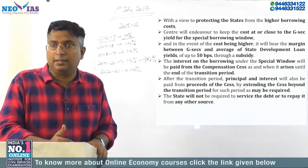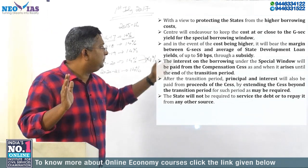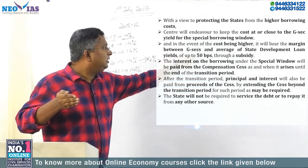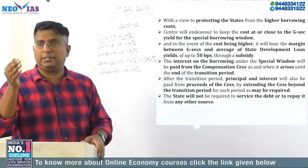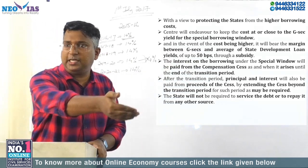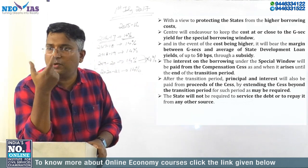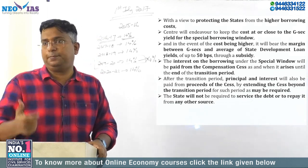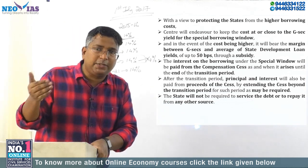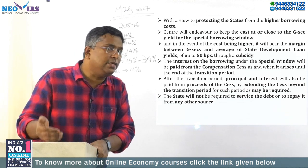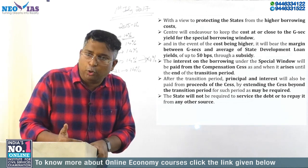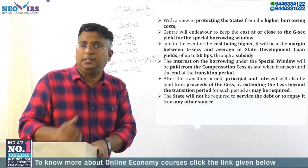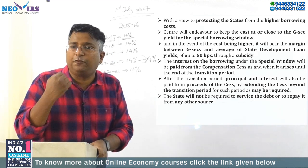In any case, if the interest rate is higher, the center will try to ensure the interest rate is closer to the central government borrowing rate. If there is a difference between the central borrowing rate — the government securities yield — and the average State Development Loan yield, 50% of that difference the center will provide as a subsidy to the state.